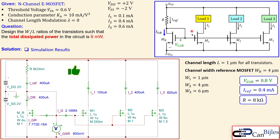In this example we scaled down the current for load one, created an exact copy for load two, and scaled up by a factor of 1.5 for load three. If you have any questions or comments about this example, please let me know in the comment section. See you next time in another video — take care.